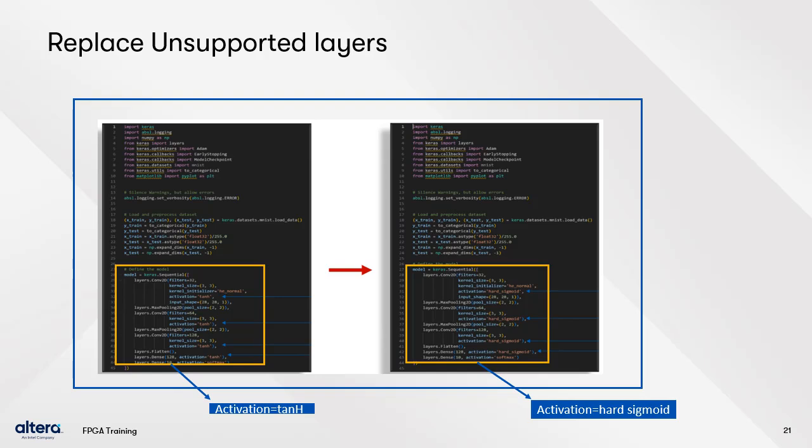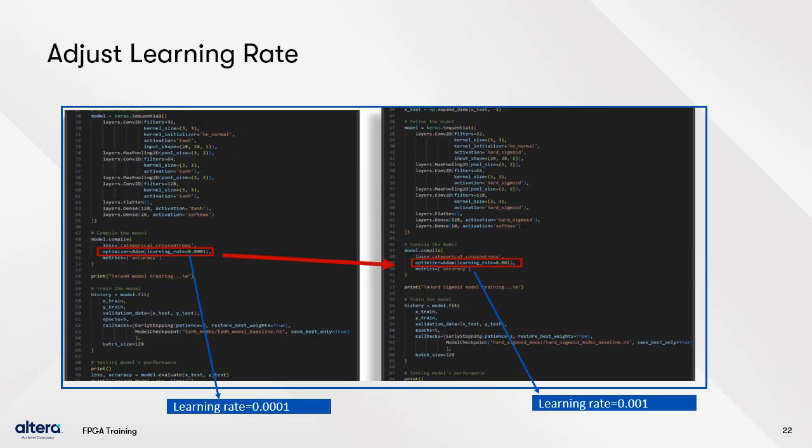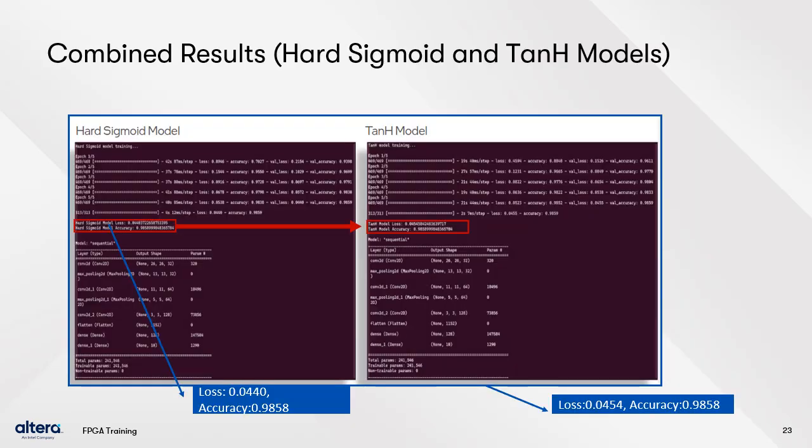To address this, we will replace the TanH layers with hard sigmoid activation and retrain the model. The blue arrows on the left indicate the TanH activation layers that need to be changed, while on the right, the blue arrows show they are replaced with hard sigmoid activation. Here is an example of the hyperparameters such as the learning rate of the Adam optimizer. Since the activation layer changed from TanH to hard sigmoid, we adjusted the learning rate from 0.0001 to 0.001 to achieve similar performance. After retraining, there is only a small difference in loss and accuracy between the two models.